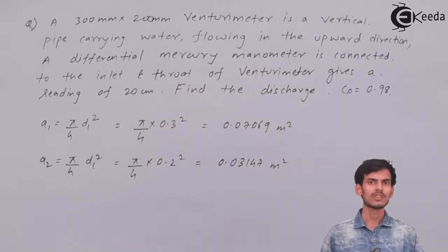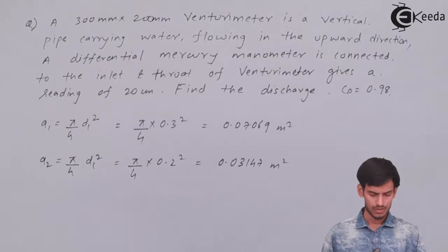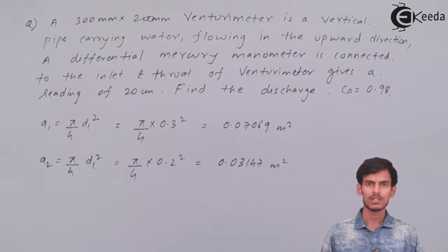So first of all you have to calculate both the areas and once you get the area, go to the formula and substitute the values and get the answer of the discharge.